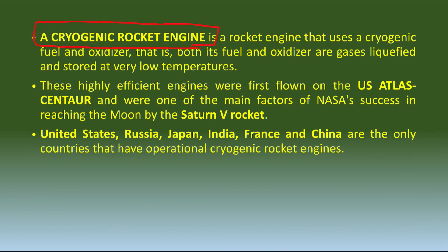Cryogenics is used in cryogenic rocket engines. The first and second stages use solid and liquid propellants respectively. Lekin joh third stage hai, in that stage cryogenic technology is used — liquid hydrogen is used as a fuel and liquid oxygen is used as an oxidizer. Yeh technique bilkul limited nations ne use kari hai. Sab se pehle joh highly efficient engine tha wo use hua tha US Atlas Centaur mein — yeh bahut remarkable success rahi NASA ki. The nations that have developed cryogenic rocket engines include United States, Russia, Japan, India, France, and China.